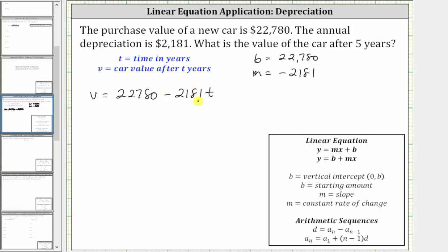Now again, this should make sense. The car value v after t years is equal to the purchase price minus the annual depreciation times the number of years.